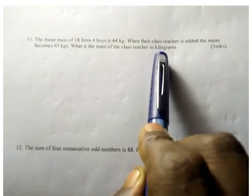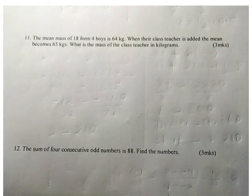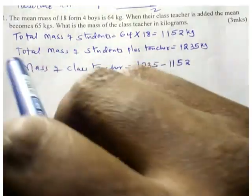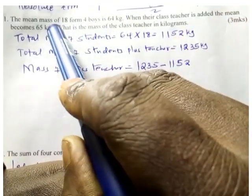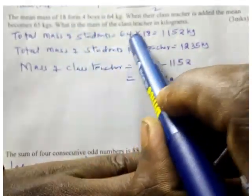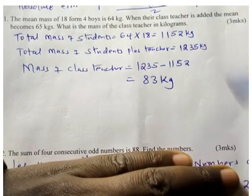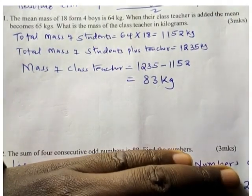The total mass of the students—the average is 64 and there were 18 students, therefore it is 64 times 18, which is 1,152 kg. This will give us the total mass of the boys.